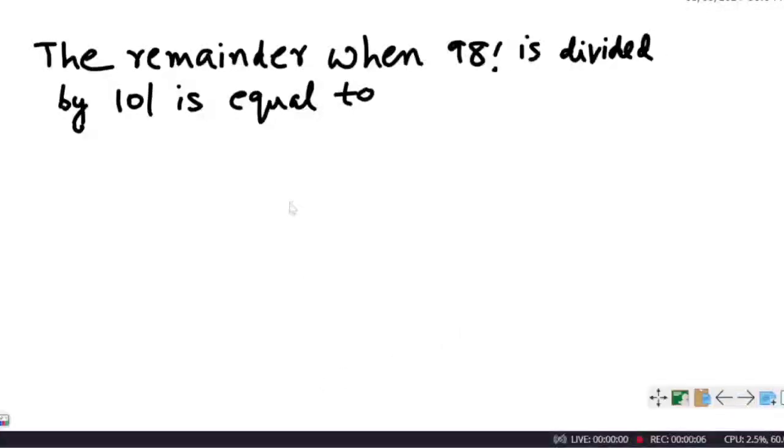What is the remainder when 98 factorial is divided by 101? We can use Wilson's theorem to solve this problem.